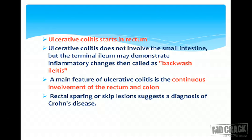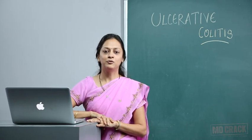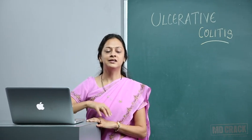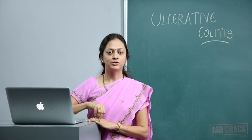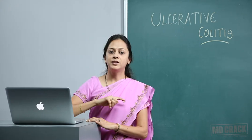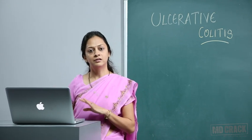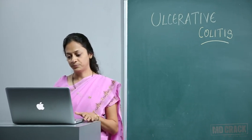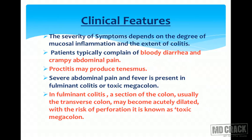A main feature of ulcerative colitis is the continuous involvement of rectum and colon. In Crohn's disease, there are skip lesions, whereas in ulcerative colitis the lesions are continuous from rectum through the colon. Rectal sparing or skip lesions suggest a diagnosis of Crohn's disease.